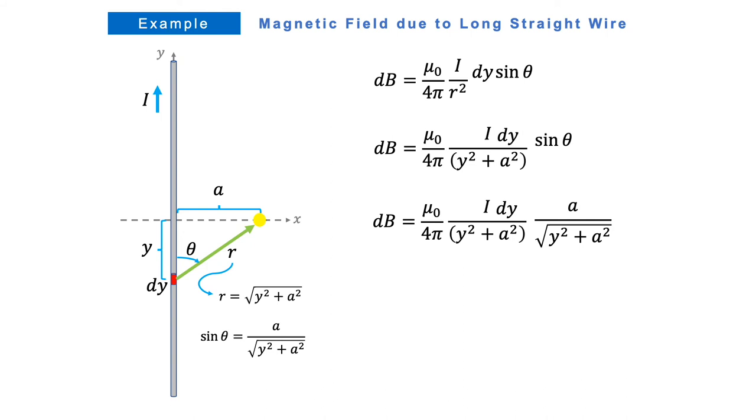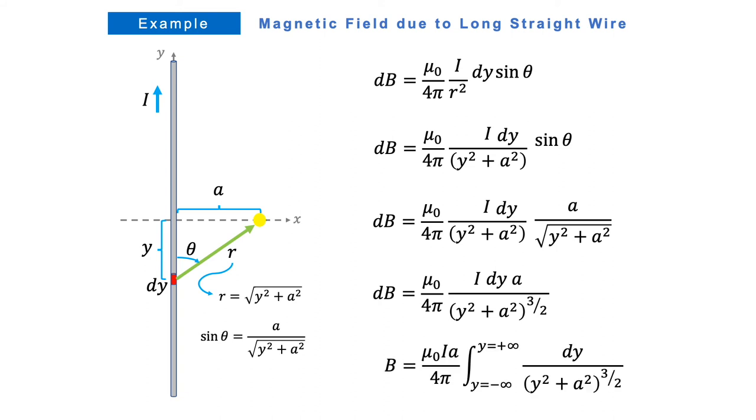Then let's multiply numerator to numerator and denominator to denominator. Integrating both sides of the equation, we will have B equals mu naught times current times a divided by 4 pi integral of dy over quantity y squared plus a squared raised to 3 halves, integrated from y equals negative infinity to positive infinity.